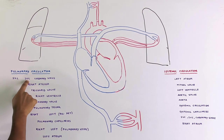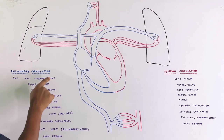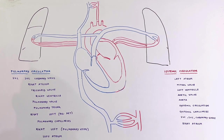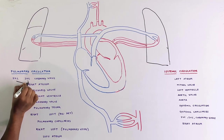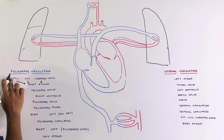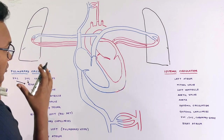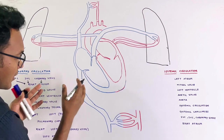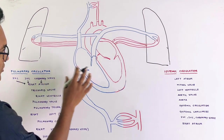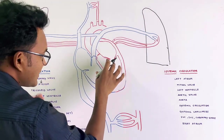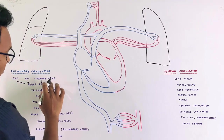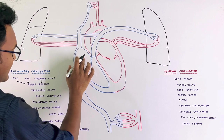The superior vena cava, inferior vena cava, and coronary sinus carry deoxygenated blood into the right atrium. The superior vena cava carries deoxygenated blood from the upper body, and the inferior vena cava from the lower body. The coronary sinus also drains into the right atrium.